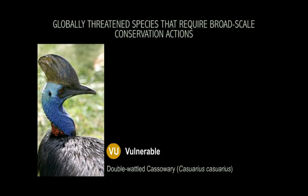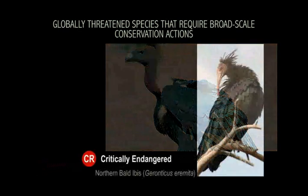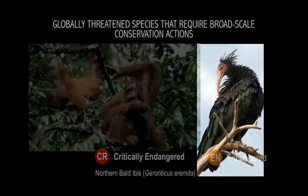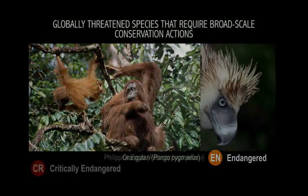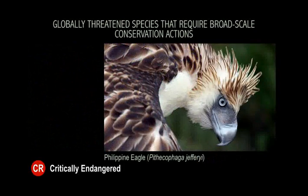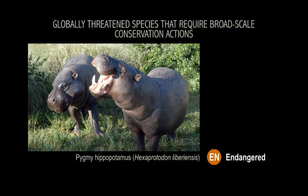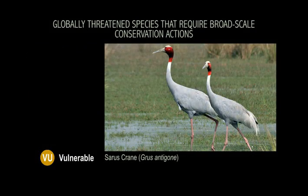At this scale, we identify targets in several ways. First, we look again at globally threatened species. While most can be protected within one or more KBAs, some need conservation at a larger scale. Why? Because they migrate between sites, have large home ranges, or are found in low numbers throughout a large area.